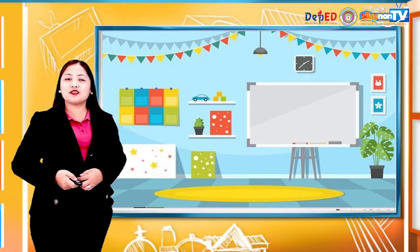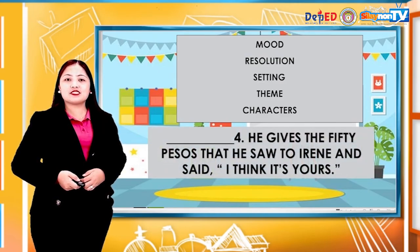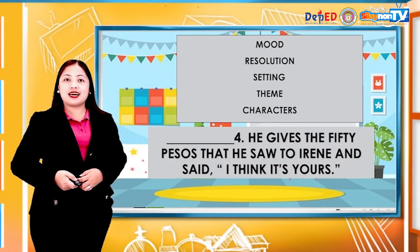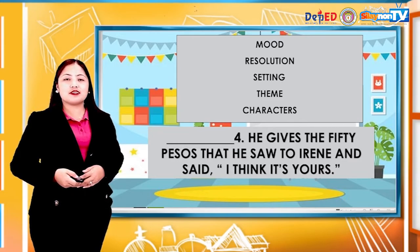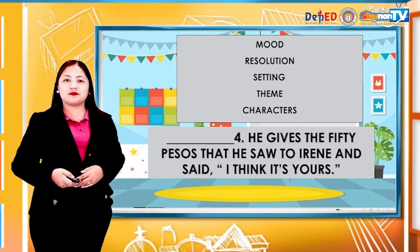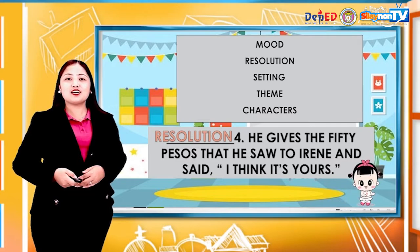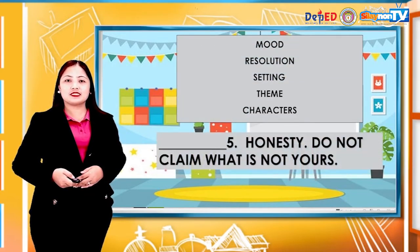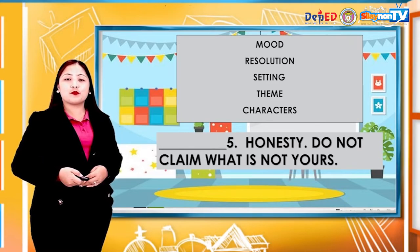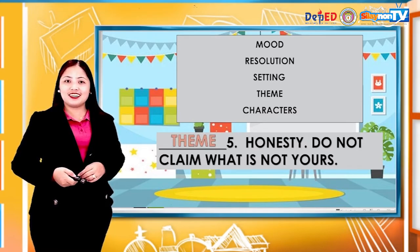Number four: 'He gives the 50 pesos that he saw to Irene and said, I think it's yours.' The correct answer is resolution. Number five: 'Honesty. Do not claim what is not yours.' The correct answer is theme. Good job, kids! You got it right.